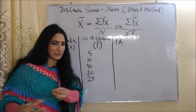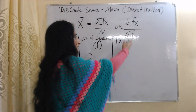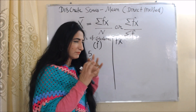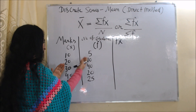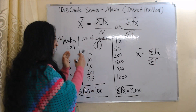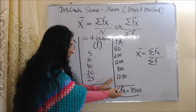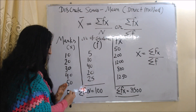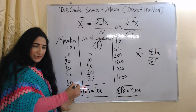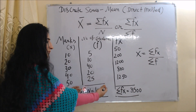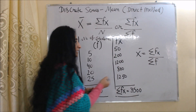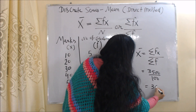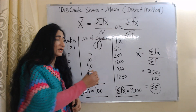We have to calculate mean by direct method. The formula requires Σfx and Σf. First, we calculate fx by multiplying x with f — so 10 with 5, 20 with 10, 30 with 40, and so on. The sum total of all fx values equals Σfx, which is 3500. When we add the number of students, we get Σf, which equals n — both are the same. Putting the values into the formula: Σfx = 3500 and Σf = 100. So 3500 / 100 = 35. This 35 is our mean.